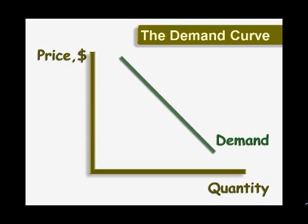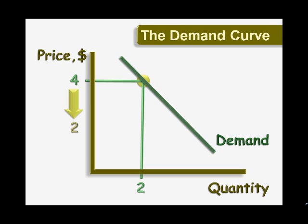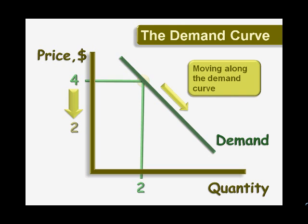The demand curve relates prices to quantity demanded. According to this curve, if the price is $4, then consumers in this market will demand 2 units total. If the price falls to $2, it becomes more attractive to us, so we move along the demand curve, increasing the quantity demanded to 4.